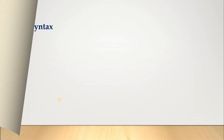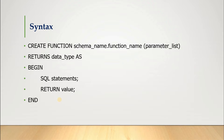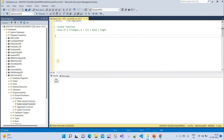Now let's understand the syntax of creating scalar functions. Like we are creating a view or a stored procedure, similarly we can create functions in SQL Server. The syntax is: CREATE FUNCTION [schema_name.]function_name (parameter list) RETURNS data_type AS BEGIN ... END. Schema name is not mandatory — by default schema name is dbo. Here we provide the function name, parameter list, and the return data type such as varchar or integer.